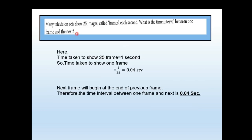Many televisions show 25 images, called frames, each second. What is the time interval between one frame and the next? Time taken to show 25 frames is 1 second, so time taken for 1 frame is 0.04 seconds. Since the next frame begins at the end of the previous one, the time interval between frames is 0.04 seconds.